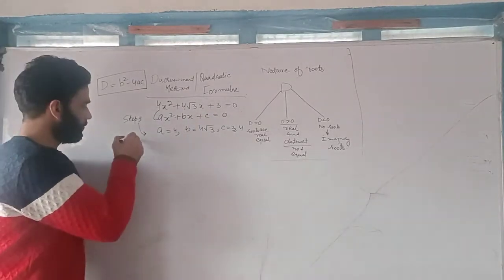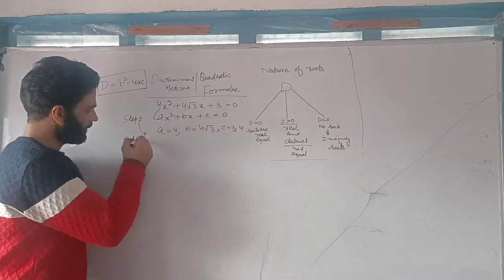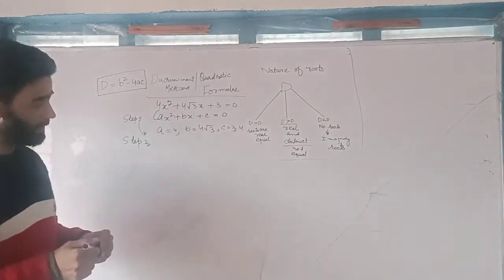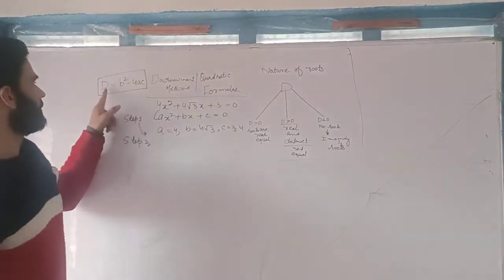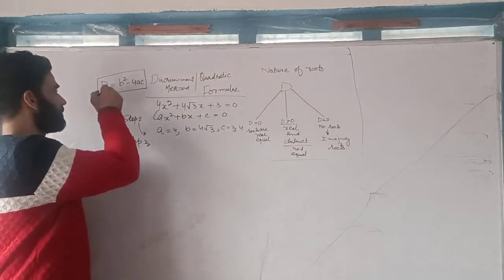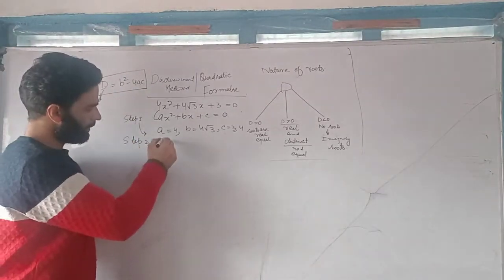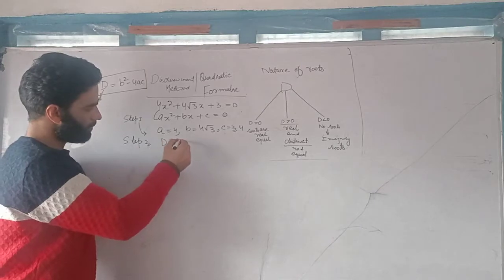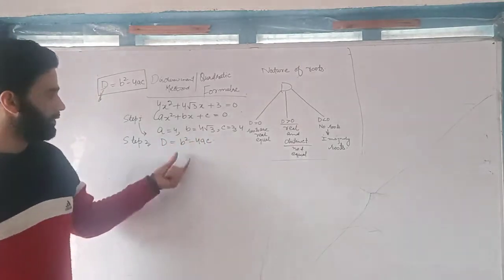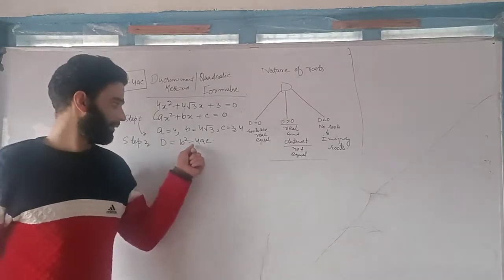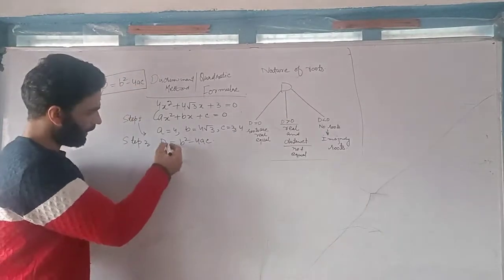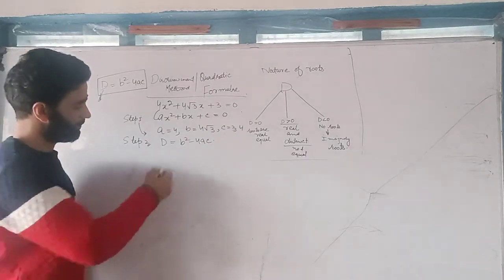Step number 2: Now I will use the discriminant method. The formula is D is equal to b square minus 4ac, which is denoted by capital letter D. Now I will substitute the values of a, b, and c to find out the discriminant.